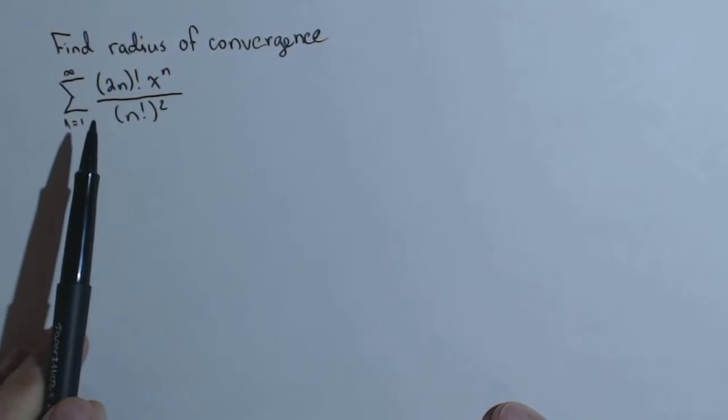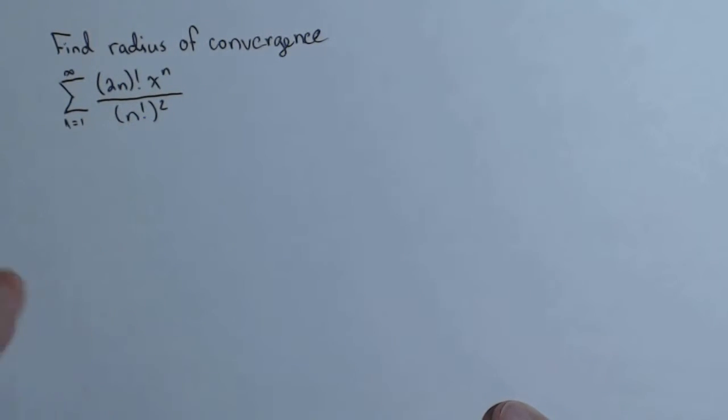So we're trying to find the radius of convergence of the following power series. And what we do is we first apply the ratio test, the limit as n goes to infinity of, just as a reminder, a sub n plus 1 over a sub n, the absolute value of that.